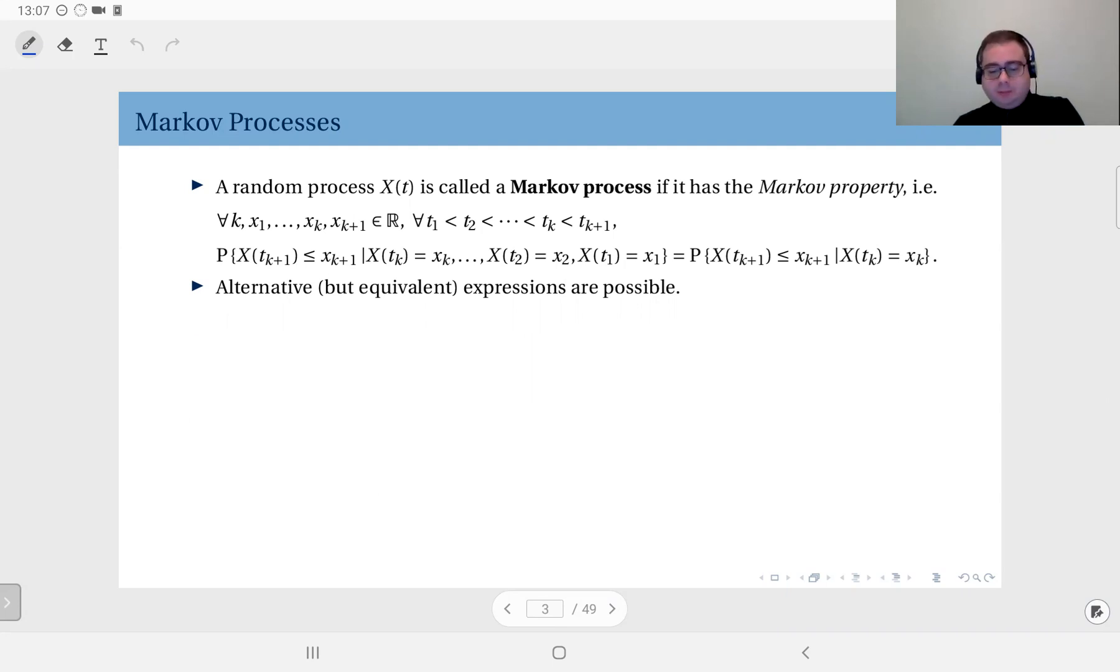Now we have a random process X(t). By the way, this could be discrete time, continuous time, discrete valued, continuous value - any type of random process could be a Markov process. But here to keep it general I chose continuous time continuous value in terms of notation. Here we have again a bunch of observations. I have the X value, X(t) value at t1, and then at t2 etc. up to tk. So I have k observations of this random process, and I know those values x1, x2, etc. up to xk.